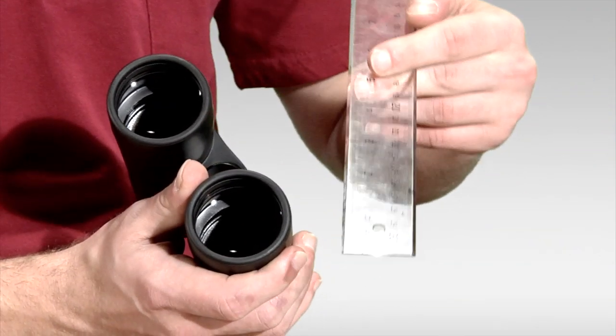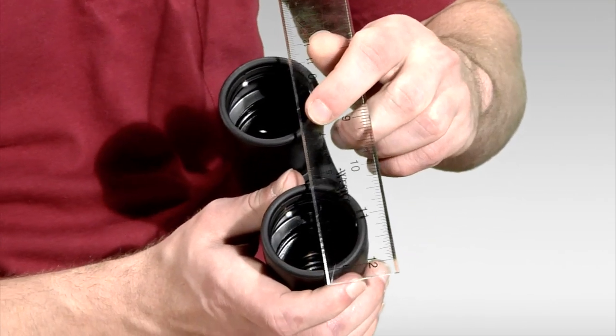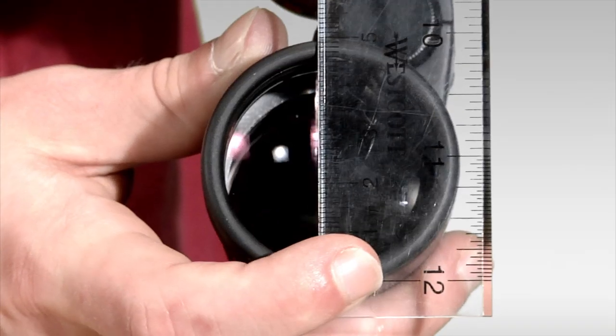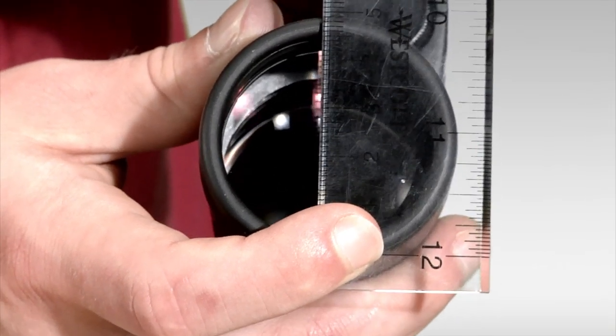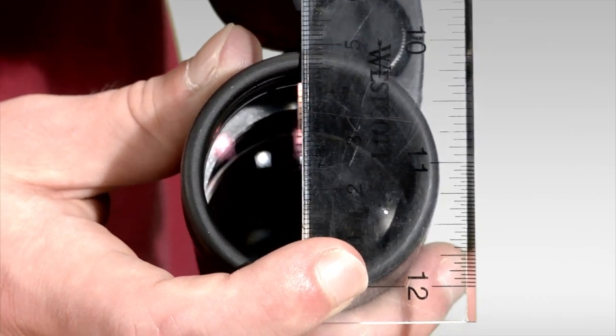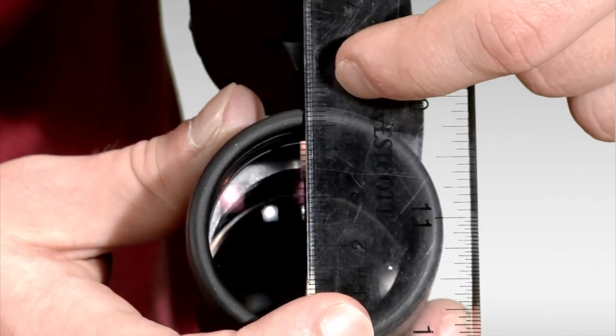So what you'll do is you take a ruler, and you'll use in millimeters the end of the ruler there, and then just hold your finger down there and rotate the ruler until you see the farthest distance of the objective lens here, which looks like on this binocular is about 50 millimeters.